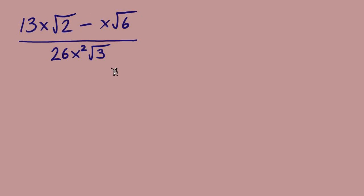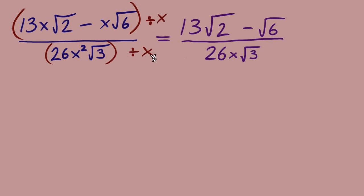There actually is something that we can do. We can divide out from all three of these terms — we can divide out an x. From each of these terms, there is an x available outside of the radical. So we'll divide out an x from numerator and denominator, making sure we can divide it out from all the terms. Dividing that x out leaves us with just 13 radical 2. Dividing this x out leaves us with minus radical 6. In the denominator, 26x squared radical 3 — there were two x's, we divided one out, leaving 26x radical 3.